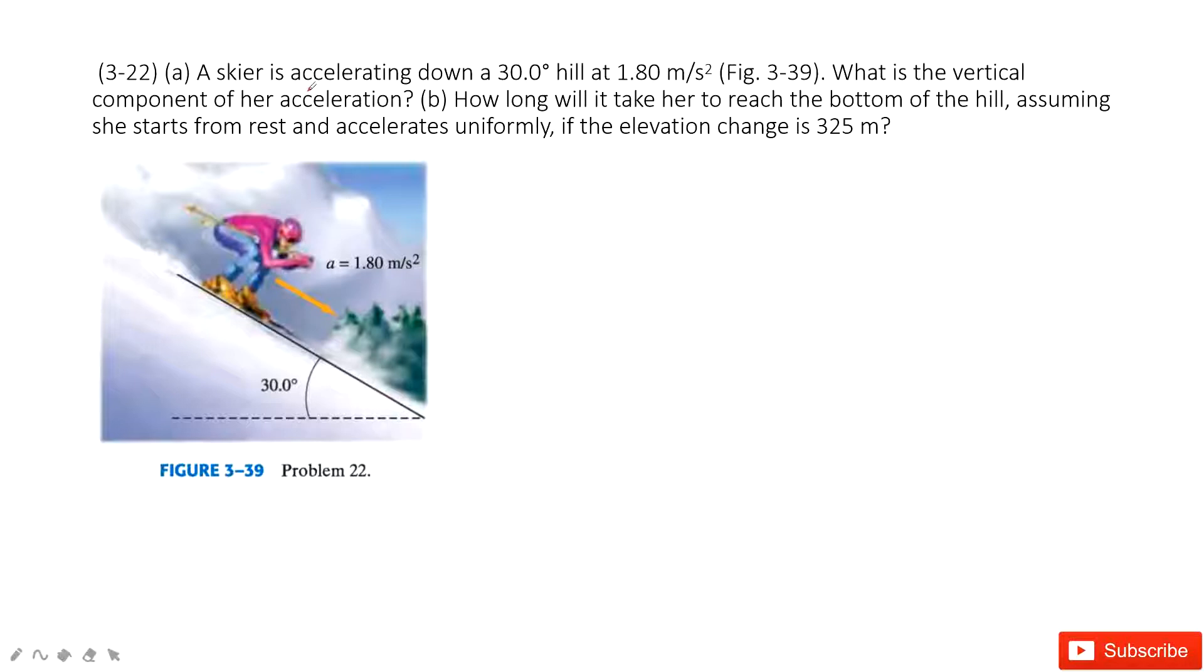The problem tells us we have a person accelerating down a 30 degree hill at an acceleration of 1.8 meters per second squared. It asks what is the vertical component of the acceleration, and I suggest you draw a picture to solve these problems.